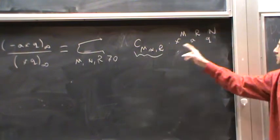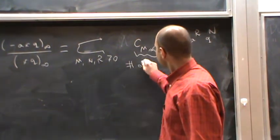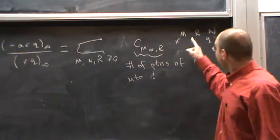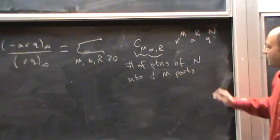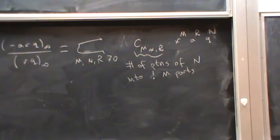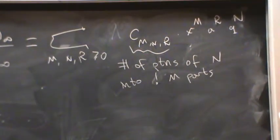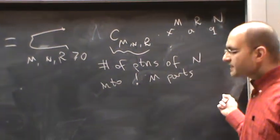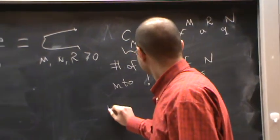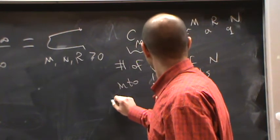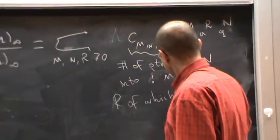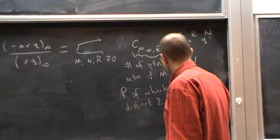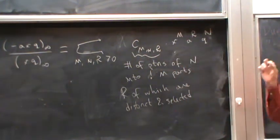This coefficient counts number of partitions of n into exactly n parts. So that the exponent of q is the number being partitioned. Exponent of x is the number of parts, number of total parts that are used. And the exponent of a are selected parts, selected distinct parts.